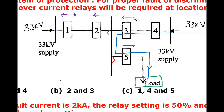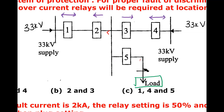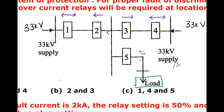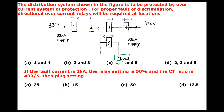Similarly, carrying out the same exercise for relays 3 and 4: relay 4 is non-directional and relay 3 is directional. For relay 5, since both normal and fault current directions are the same in its zone from the relay location to the load, relay 5 is non-directional. Therefore, only relays 2 and 3 are directional relays.